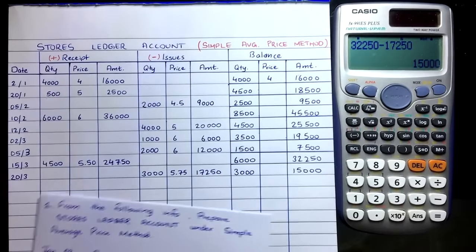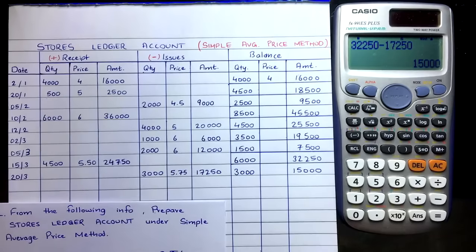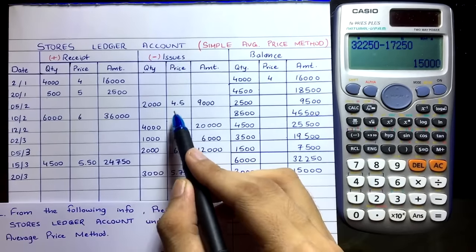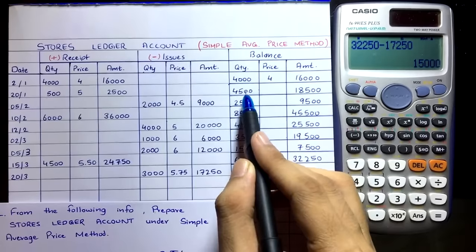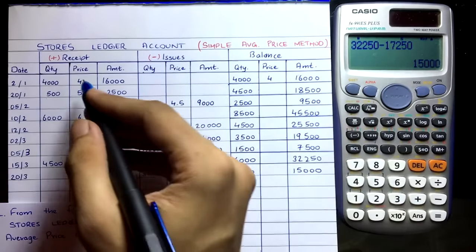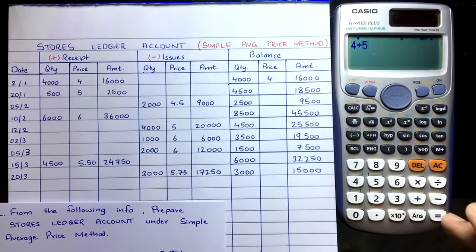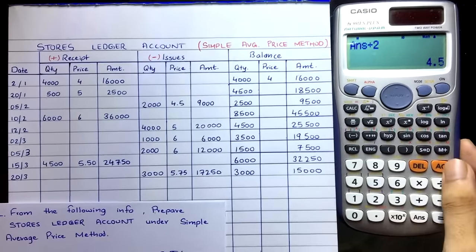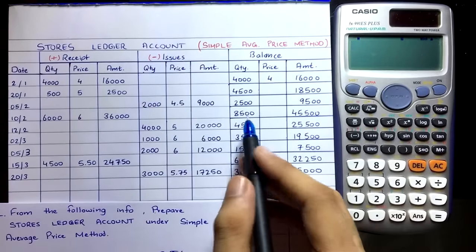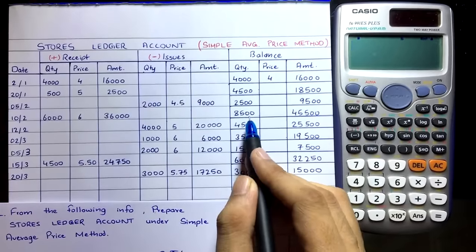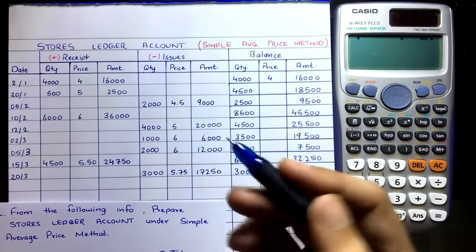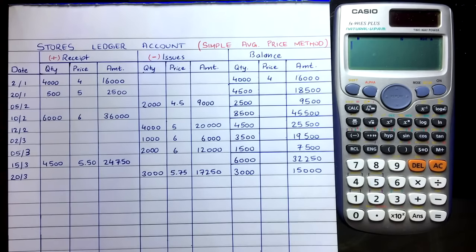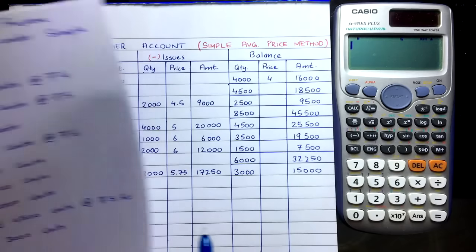This is how you go about the Simple Average Price Method. Unlike FIFO and LIFO, whatever you purchase, you combine them together. Whenever you make an issue, you must be careful about the combination — check what lots are in the combination, take only those prices, and calculate the average. For example, if two lots with prices ₹4 and ₹5, then (4 + 5) ÷ 2 = ₹4.50. Practice two or three problems and you will get it — it's very simple.